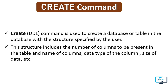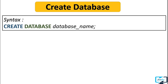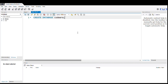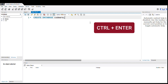Let's first create a database. This is the general syntax: you write the keyword CREATE DATABASE followed by the name of the database. You can give any meaningful name — for example, the name of a company, website, or college. Here I will create a database with the name Codera. To execute this query in MySQL Workbench, select the complete query and click the execute option, or simply press Ctrl+Enter.